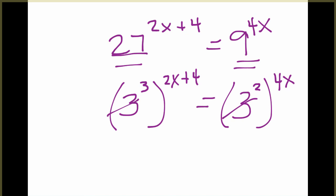When you have a power raised to a power, you're going to multiply those two together. On the left, we have 3 times 2x plus 4. On the right, we have 2 times 4x, which we can just multiply together.